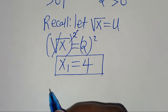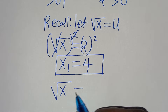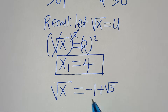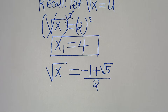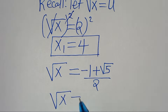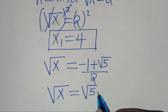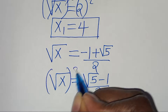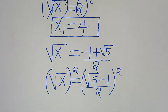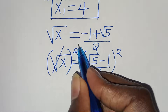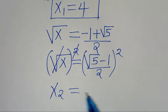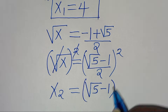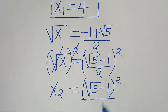Now √x equals u₃, which is (minus 1 plus √5) divided by 2. We can write this as √x equals (√5 minus 1) over 2. Squaring both sides to solve for x, x₂ is equal to (√5 minus 1) squared divided by 2 squared, which is divided by 4.